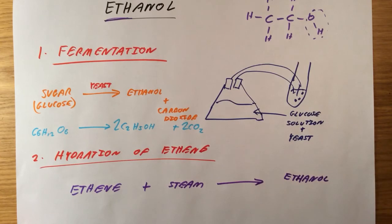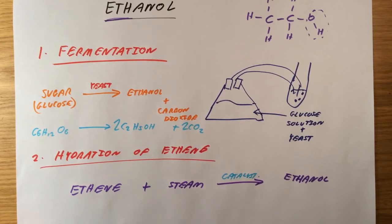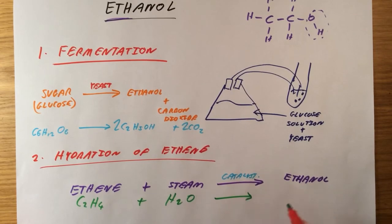We do need a catalyst for this process, so it won't work unless we have some form of catalyst to get it going. And again, as a simple equation, we would write it as ethene, C2H4, plus steam, H2O, yields ethanol, C2H5OH. That should be balanced.